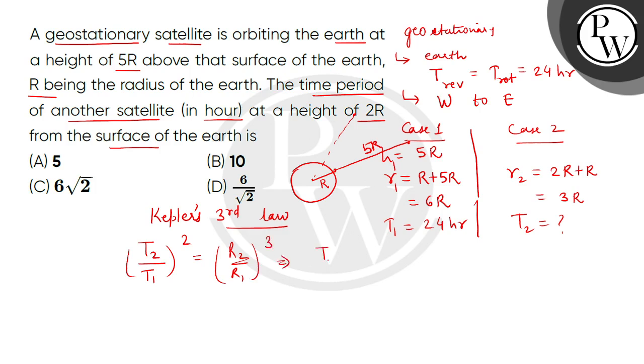Now let us put the values. T2 divided by 24 hours whole squared equals 3R divided by 6R whole cubed. Taking the square root of both sides, this becomes 3 divided by 6 to the power of 3/2. So T2 equals 24 divided by 2 square root of 2, which gives us 12 divided by square root of 2. This equals 6 square root of 2 hours. So the correct answer is option C.